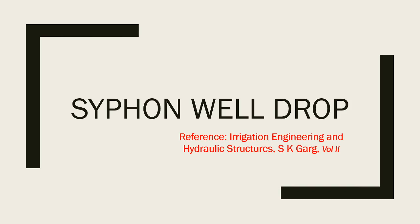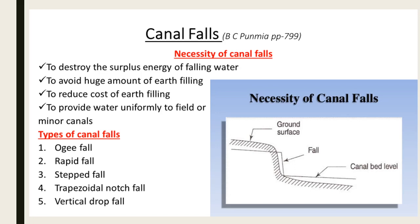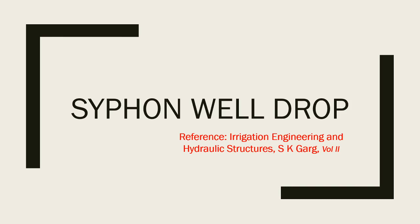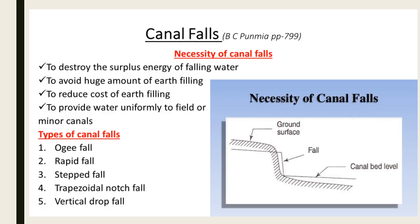In our third module we have a total of six designs of various hydraulic structures. The first two designs are aqueduct and siphon aqueduct, both examples of cross drainage work. Siphon well drop is an example of canal fall, and the necessity and various types of canal falls were explained in our second module.